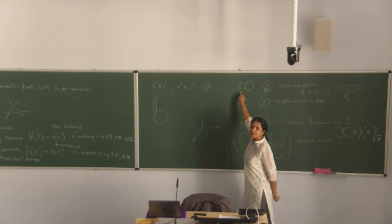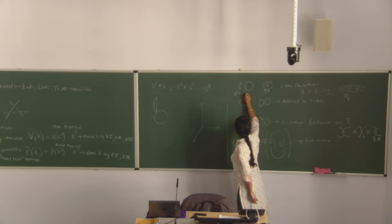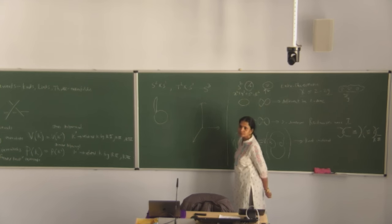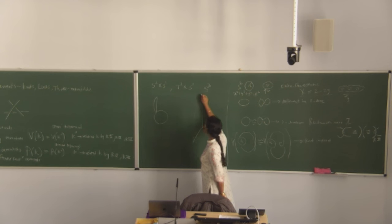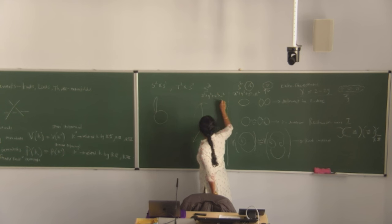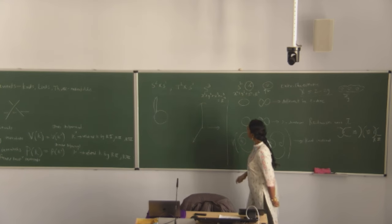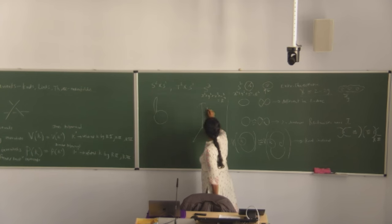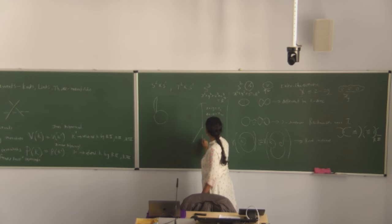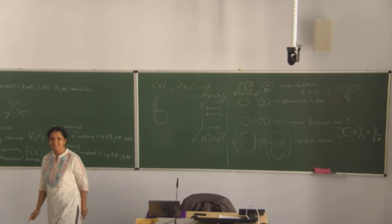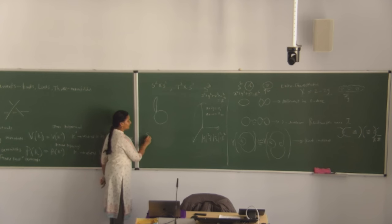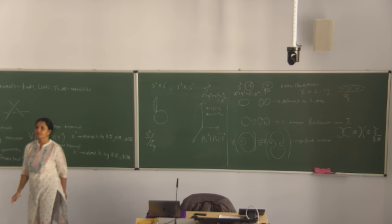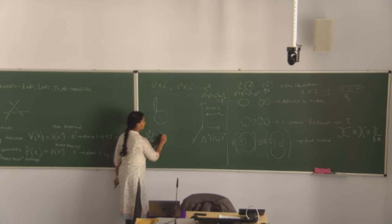Formally, S2 can be given as an embedding in three dimensions with an equation defining its radius. For S3, you write the analogous equation. There is also another way, writing x plus iy as Z1 and z plus i-omega as Z2, so that mod Z1 squared plus mod Z2 squared equals R squared. This complex coordinate notation lets you see other kinds of three-manifolds, such as S3 mod Z_p.